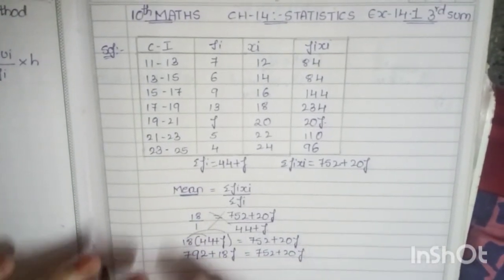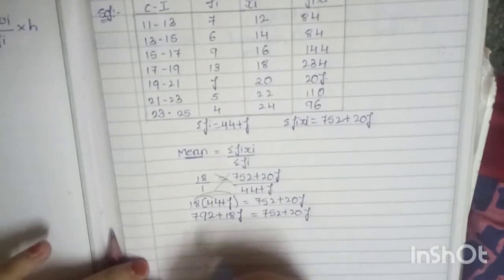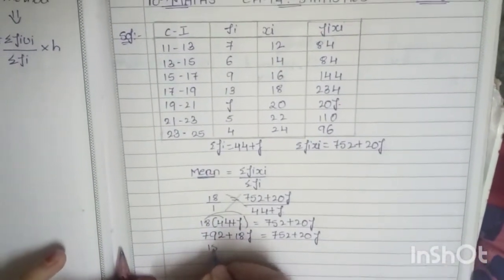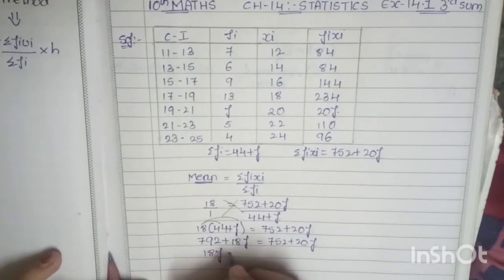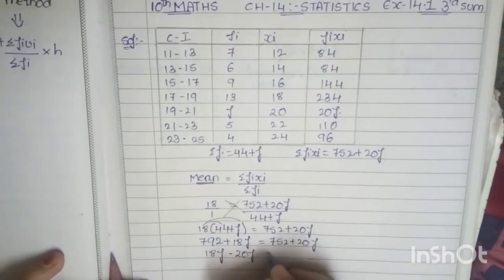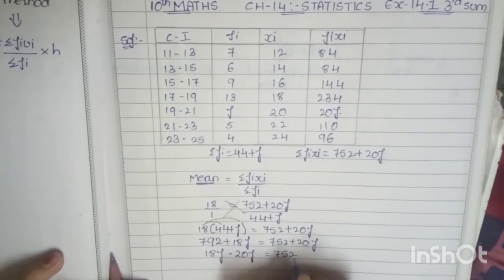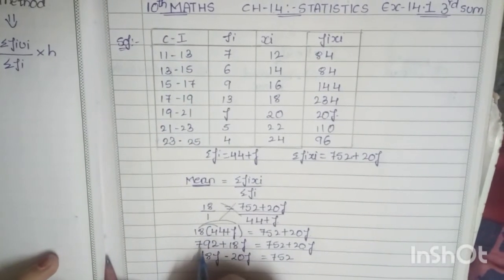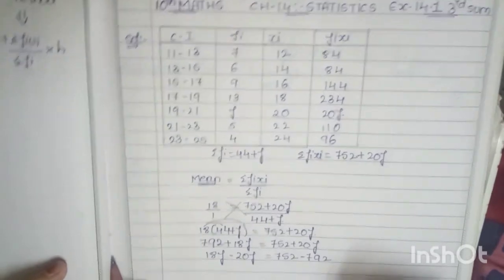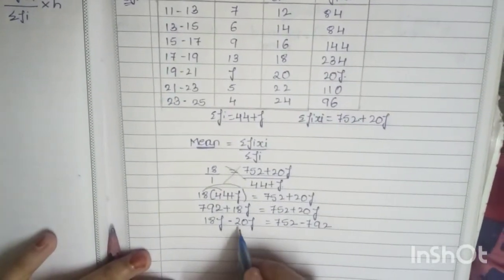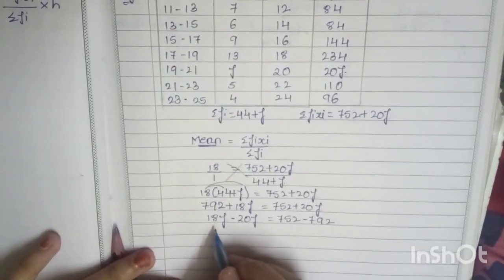Now we have to bring all the numerical values to the other side and the f values to the other side. 18f is already here, so on bringing 20f here it becomes minus 20f. It equals 752, so plus 792 coming to the right hand side becomes minus 792.